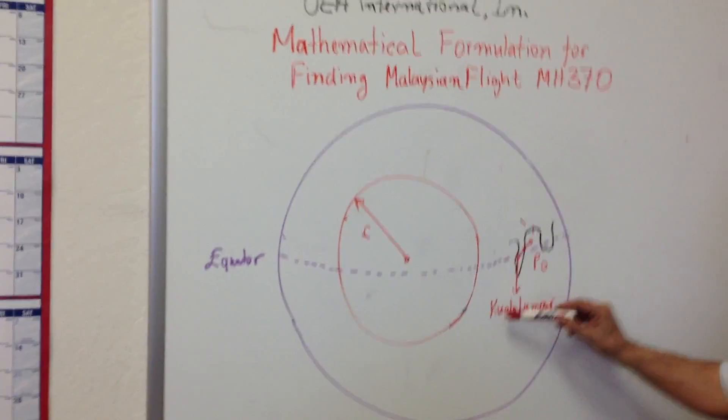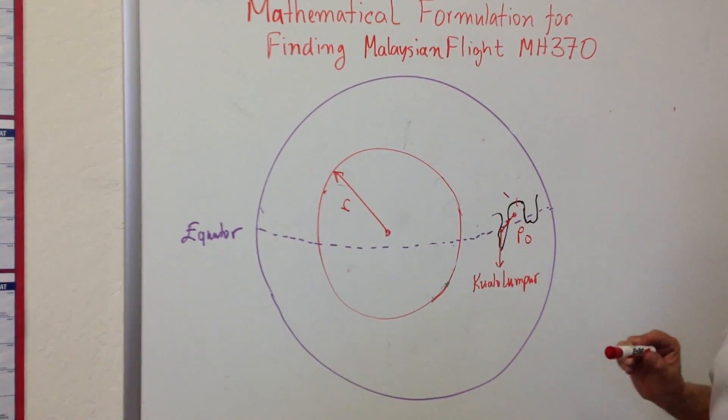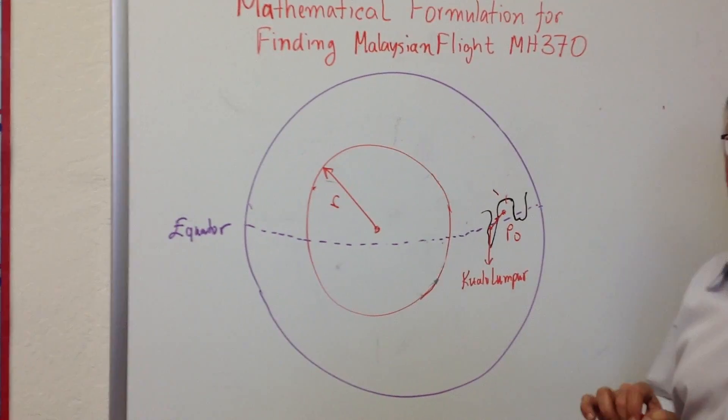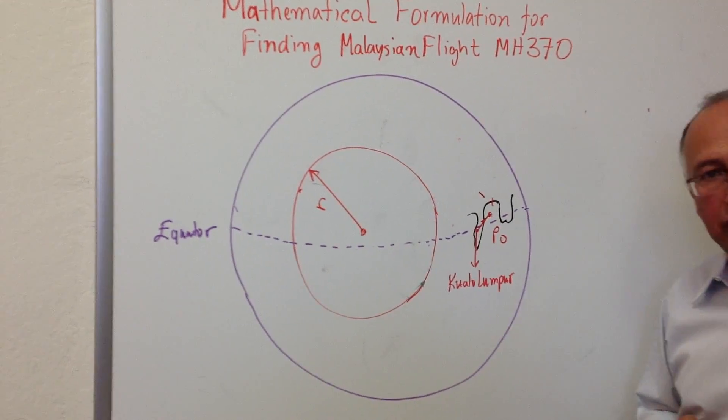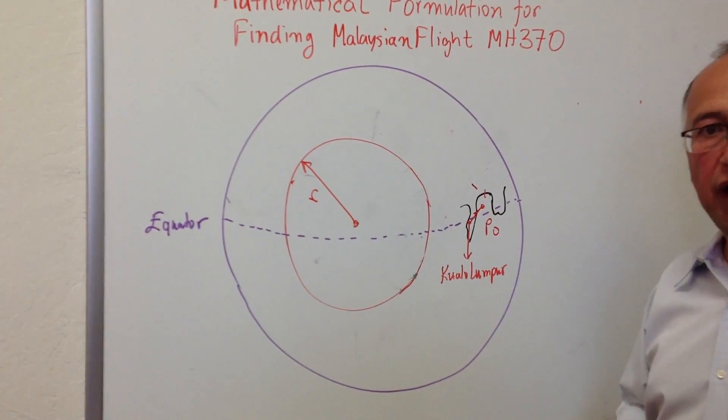The first point here is Kuala Lumpur, where the plane took off. P0 coordinate is the place where we lost contact with the plane, where the pilot said good night and signed off.